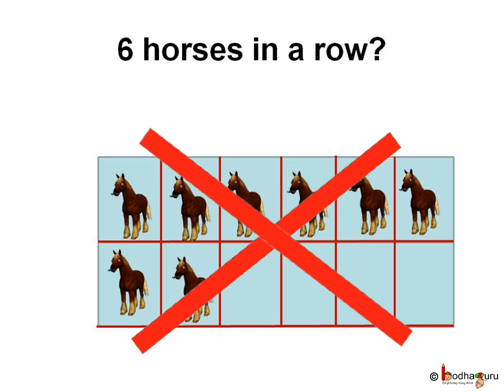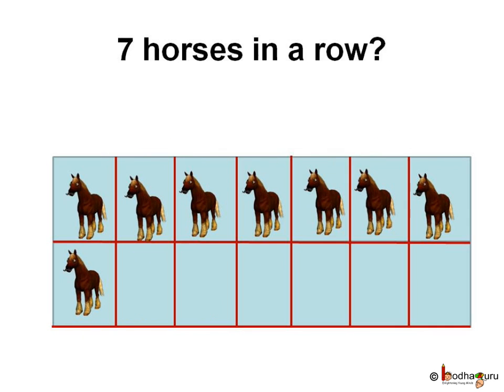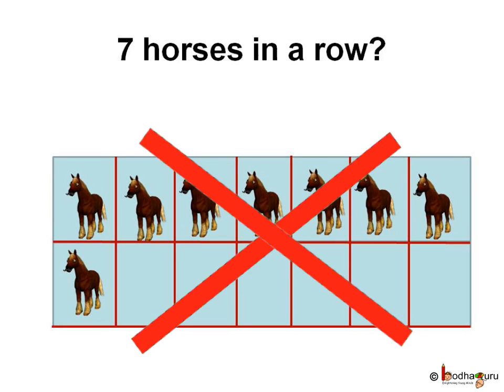And then he tried with 7 horses in a row, which was also not possible because he wanted each row to have the same number of horses. In this case only the first row will have 7 horses and the second row will just have 1 horse. So this option won't work for him.